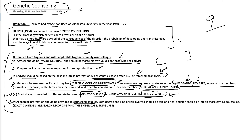After giving the facts, the risks and degree of severity of the particular disease should also be communicated. The final decision should be left with those getting counseled. Exact diagnosis is needed, and research records along with the empirical risk figure should all be taken into consideration.